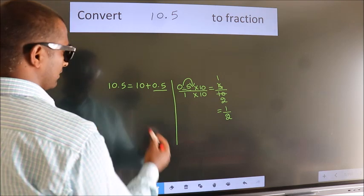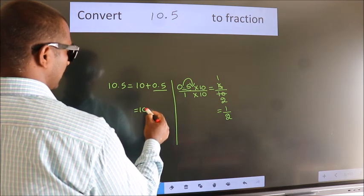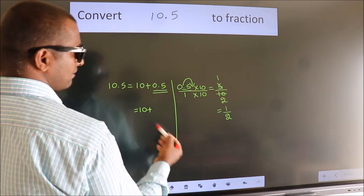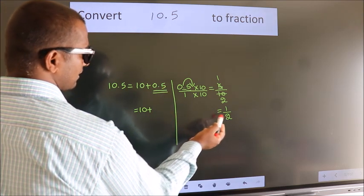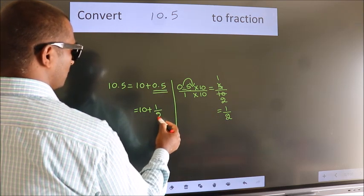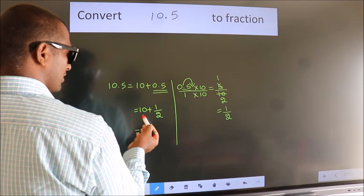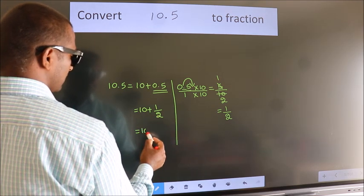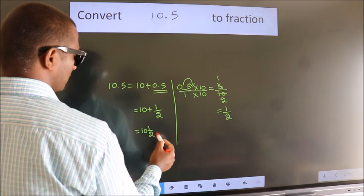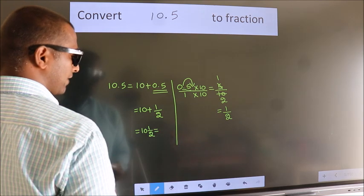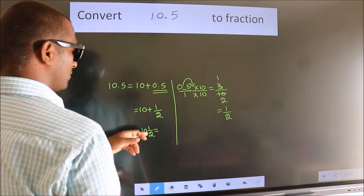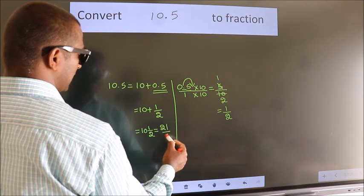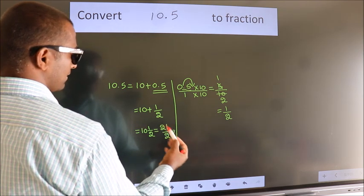Now here 10 plus, in place of 0.5 I write this fraction 1 by 2. 10 plus 1 by 2 in mixed fraction it is 10 and 1 by 2. In improper fraction it is 10 into 2, which is 20 plus 1. 21 by 2 is our fraction.